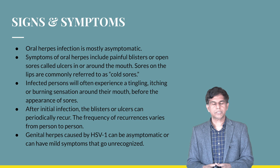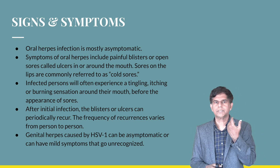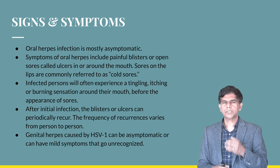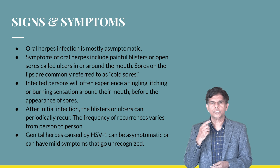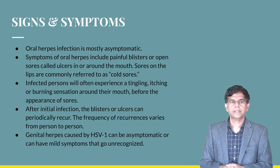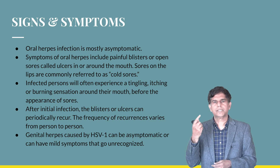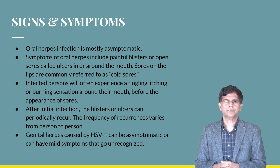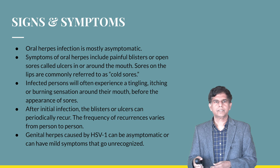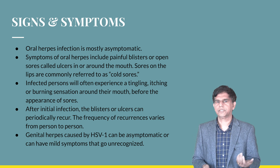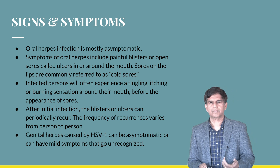Signs and symptoms: most oral herpes infections remain asymptomatic. Symptoms include painful blisters or open sores called ulcers around the mouth — commonly called cold sores. The infected person typically experiences tingling, itching, or burning sensation around the mouth before the sores appear. After the initial infection, blisters form and eventually resolve. Genital herpes can be asymptomatic or have mild symptoms, with scabbing seen in the final stages.